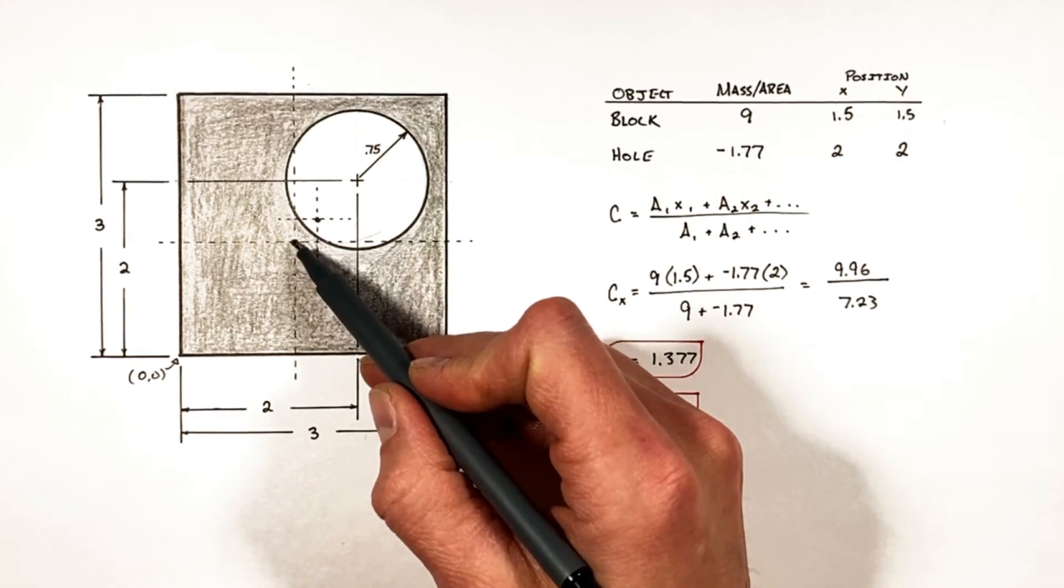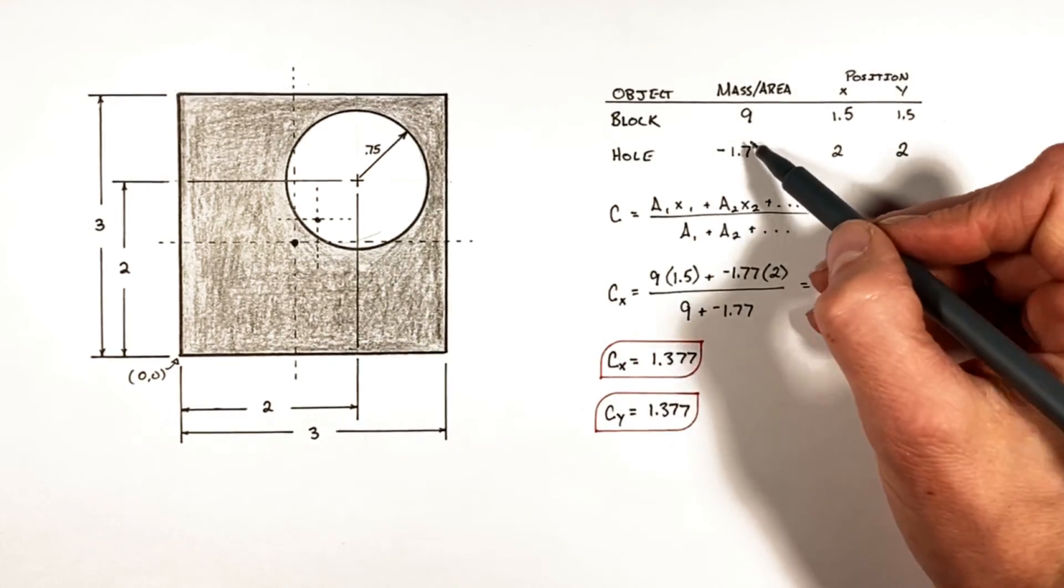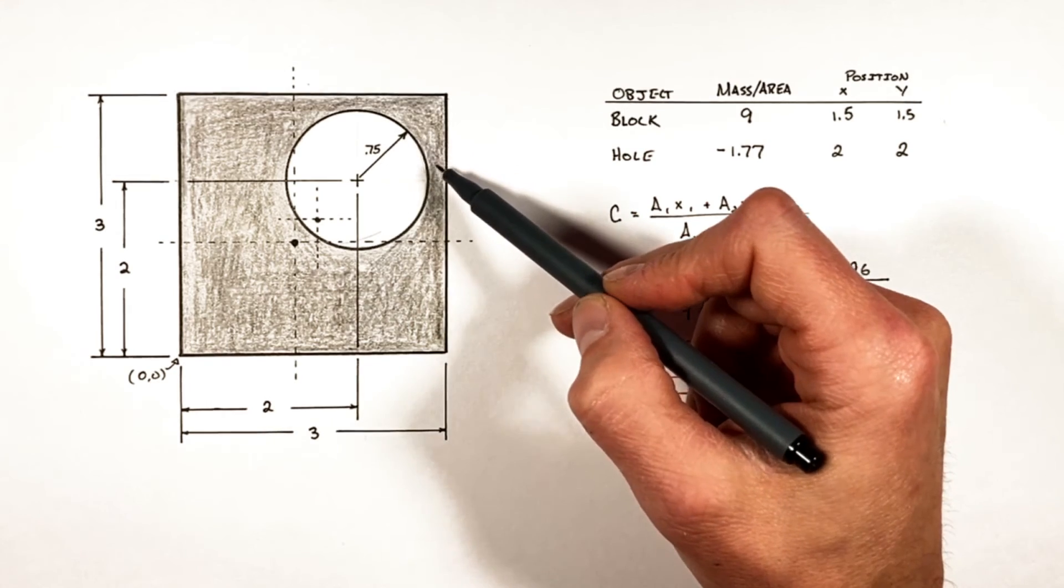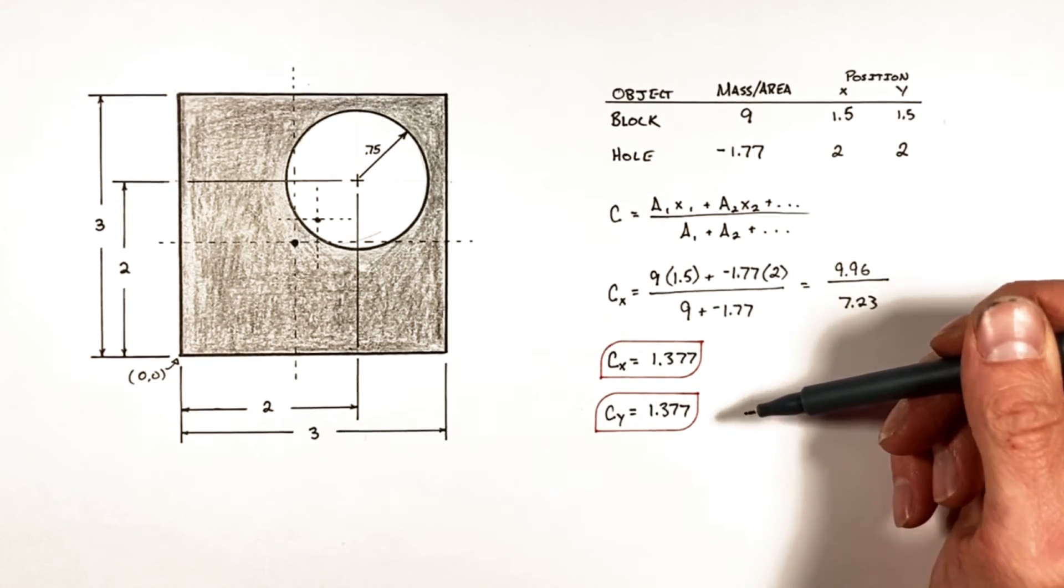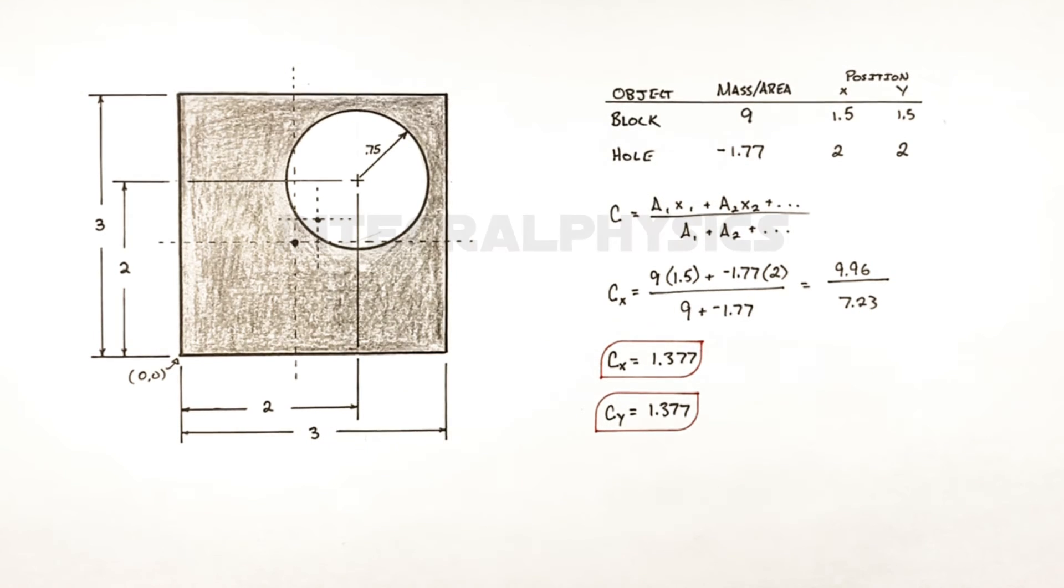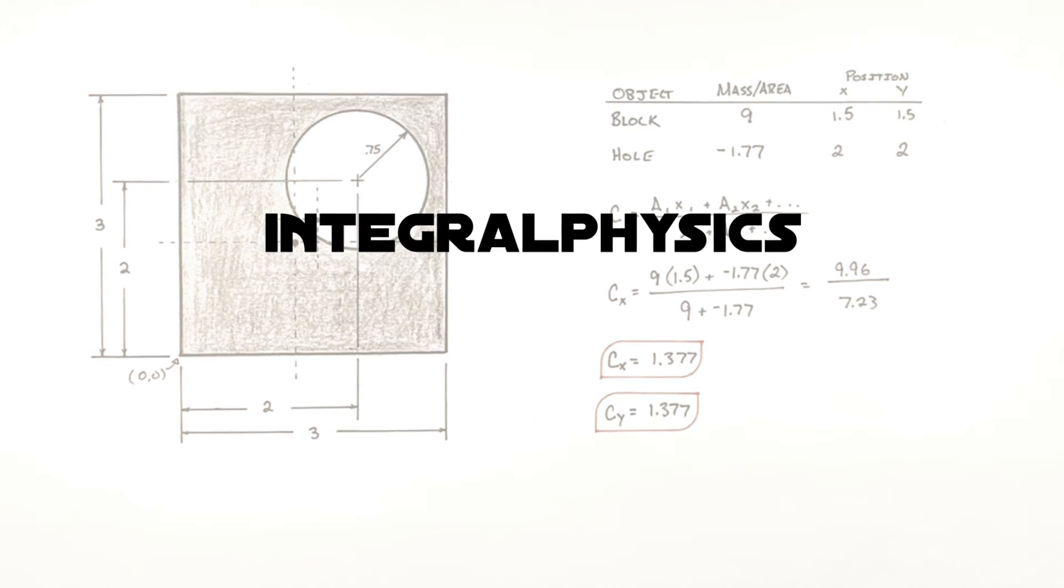Using a negative area for this hole that was cut out of the block is what's called using a subtractive method of finding center of mass or center of area. I hope you found this useful, and on that note, that's all for now.